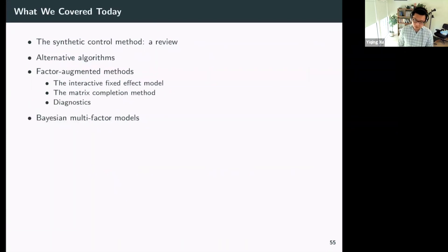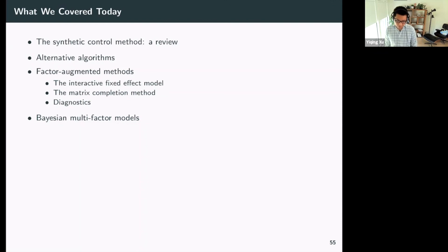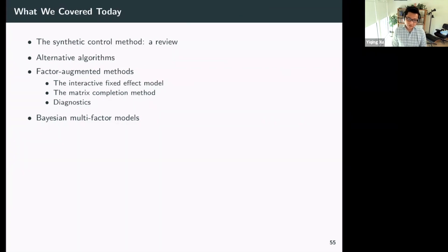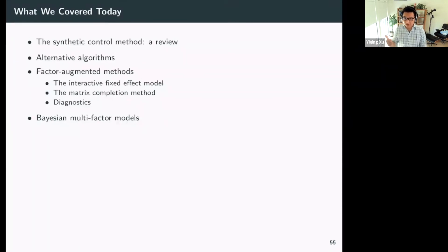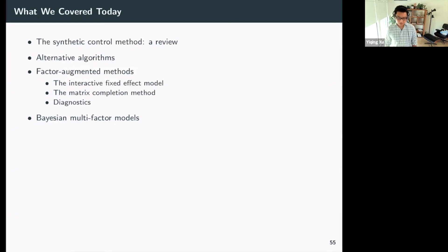To summarize what we've covered: synthetic control, the synthetic control algorithm from a pure algorithmic perspective linked to factor models, interactive fixed-effects models in a DiD setting, matrix completion, diagnostics under the counterfactual estimation framework, and the Bayesian approach with its inferential advantages. Next we move on to matching methods and sequential ignorability, then doubly robust methods that combine weighting and outcome model approaches.